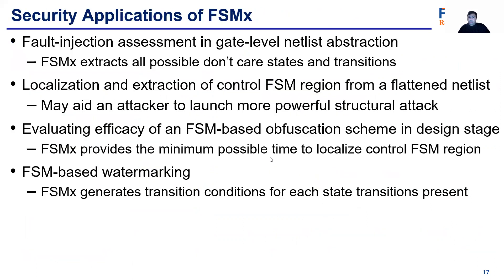Here is shown some security applications of our framework. It can be used for performing fault injection assessment, because our framework can yield all the possible don't-care states or transitions. It can also be used to localize and extract control FSMs from a flattened netlist, which may aid an attacker to launch more powerful structural attacks given its very short runtime. From the defense perspective, we can use it to evaluate the efficacy of an FSM-based obfuscation scheme, because our framework provides the minimal possible time that an attacker may take to localize the control FSM region. It can also be used for watermarking, because it generates transition conditions for each and every state transition present in a given STG.